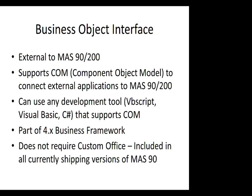Currently the Business Framework modules include General Ledger, Accounts Receivable, Accounts Payable, Sales Order, Inventory, Purchase Order, Bill of Material, and Bank Rec. It does not require Custom Office. It is included within all currently shipping versions of MAS 90 and 200 — as of today that's version 4.4 — and it allows you to connect virtually as a user with a custom application and communicate with MAS 200.